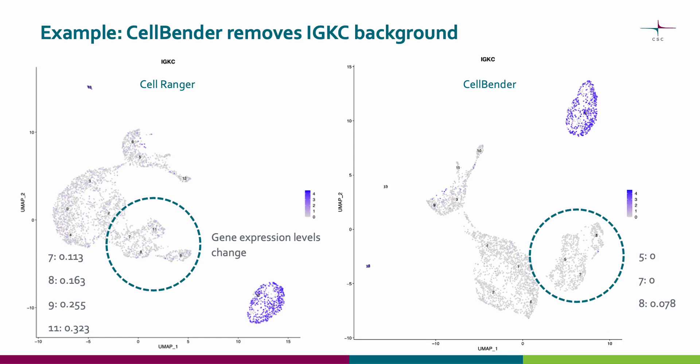This is, however, just an example, and for this dataset it may not make sense to actually remove background contamination. Remember that CellBender might be useful when a high amount of contamination is present.